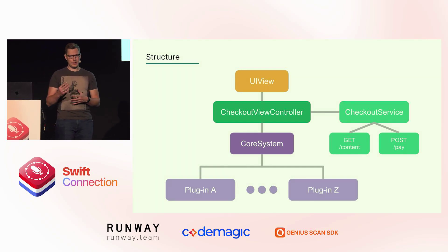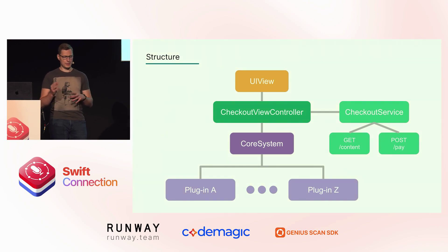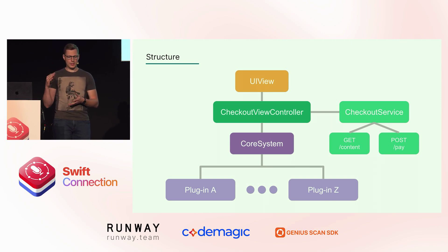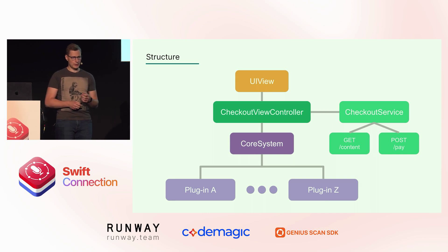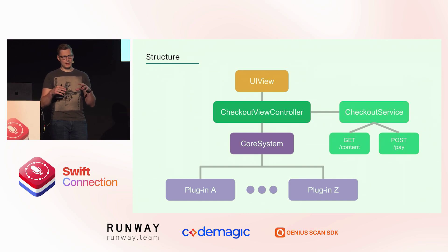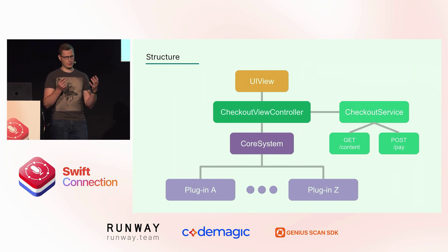Here's an example of how that breakdown could look. You have a CheckoutViewController, a service that does a GET request to get the screen content, and a POST for doing the payment when you click pay. Then you have the core system that coordinates the plugin logic. Each element you create as a plugin — if you need a banner, just create a banner plugin, put it in, and it works.